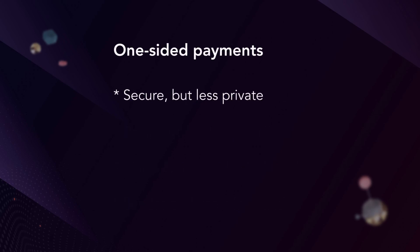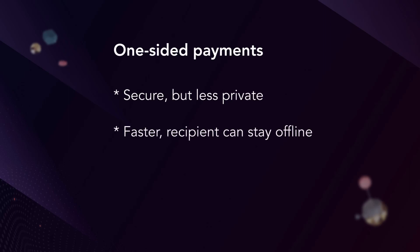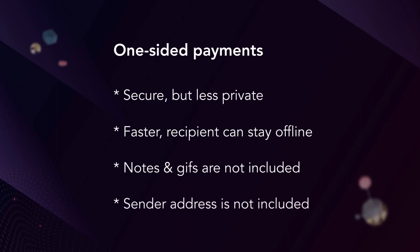One-sided payments are also secure, but a little bit less private. They are, however, faster as the recipient does not need to come online. Notes and GIFs are also not included in the transactions, and the recipient must scan the blockchain to see the funds — although Aurora does do this for you automatically. The recipient will also not know who sent the funds; in other words, your address won't be included in the transaction.